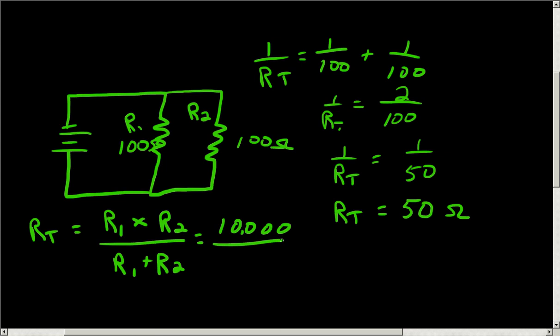That will be 10,000 ohms over the sum, which is 200. So that will give us 50 ohms. See, that one worked just as well. And you can use this formula any time you have only two resistors, and they do not have to be the same resistance.